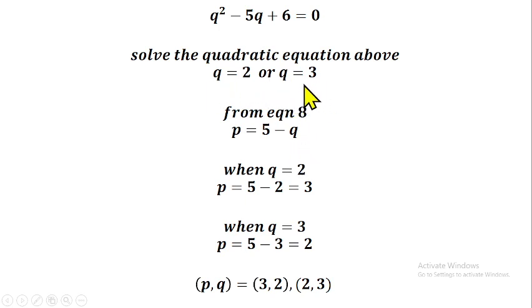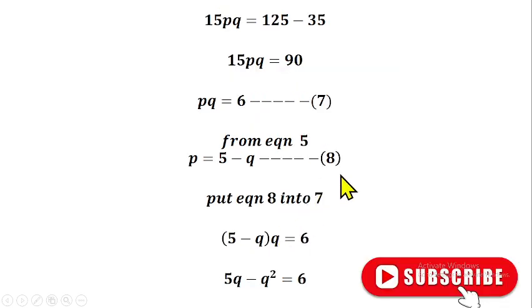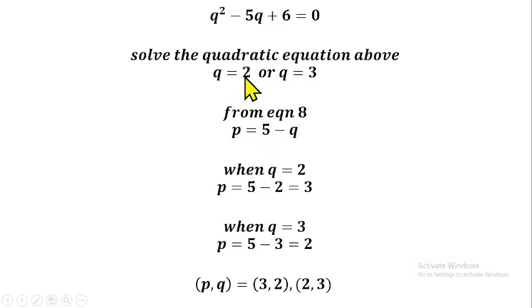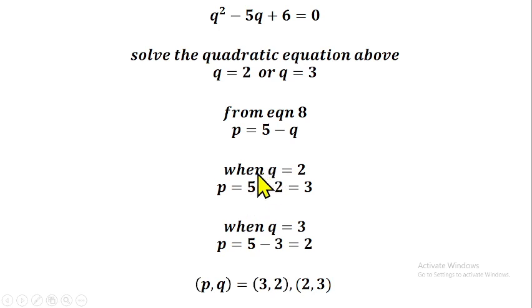Now that we know the values of q, we can find p using equation eight: p equals five minus q. When q is 2, p equals five minus two, which equals 3. When q is 3, p equals five minus three, which equals 2. So our values are: p equals 3 when q equals 2, and p equals 2 when q equals 3.